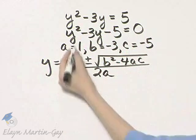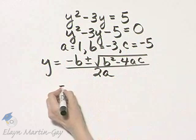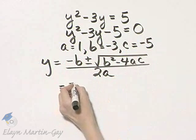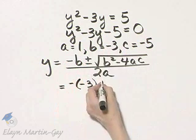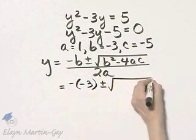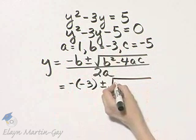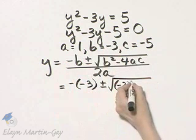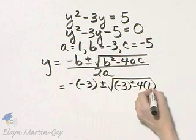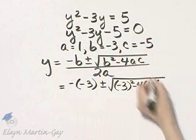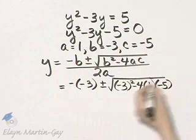And now let's put in our replacement values. That's minus, then b itself is negative 3, be careful right there, plus or minus the square root of b squared, so that's negative 3 quantity squared minus 4 times a is 1, and then times c, and that's negative 5.